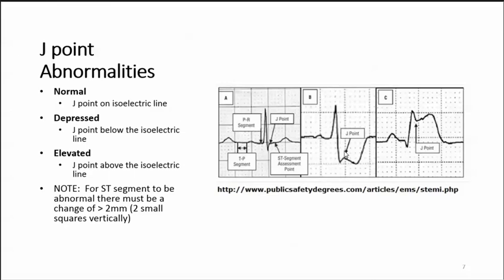Depressed — the J point is below the isoelectric line. This is a four millimeter depression, because you count the small squares. Elevated — the J point is above the isoelectric line, so again look at it in relation to the isoelectric line. Note: for an ST segment to be abnormal, there must be a change of greater than two millimeters, or two small squares, vertically.